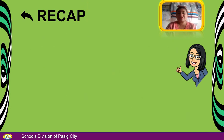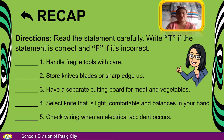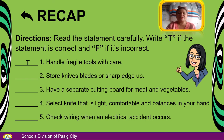Let's have a review of what you have learned from our previous topic. Directions: Read the statement carefully. Write T if the statement is correct and F if it's incorrect. Number 1: Handle fragile tools with care — True. Number 2: Store knives, blades, or sharp edge up — False. Number 3: Have a separate cutting board for meat and vegetables — True.